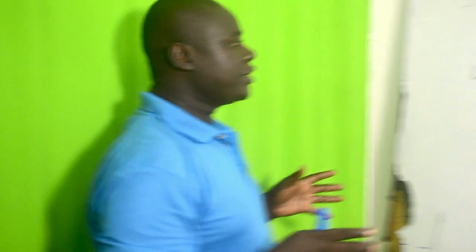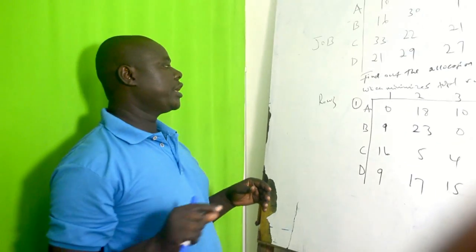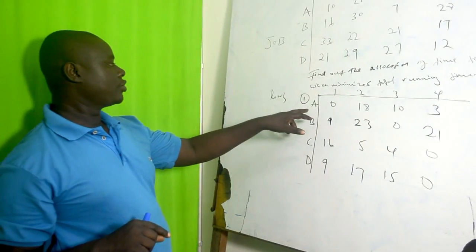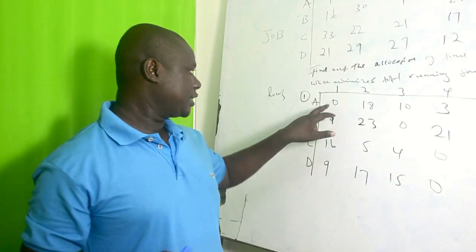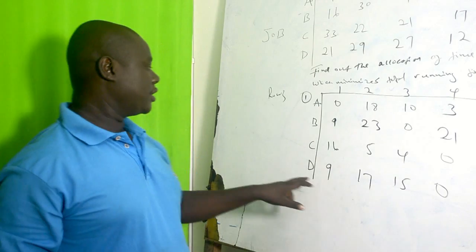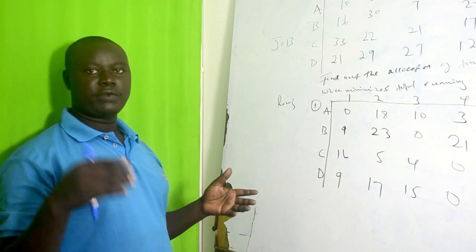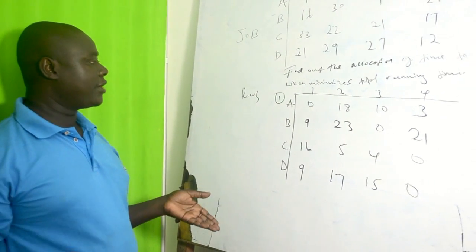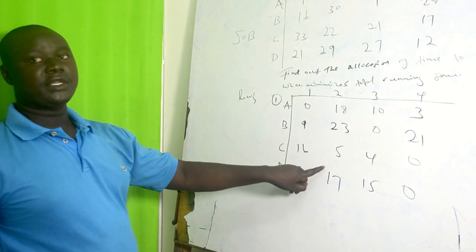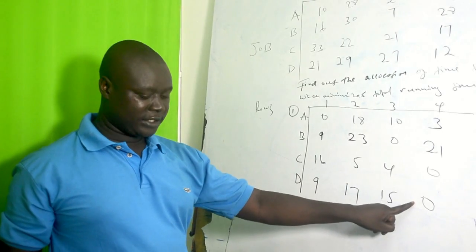After step 1, we check whether we have a zero in all rows and all columns. Row 1 has 0, row 2 has 0, row 3 has 0, row 4 has 0 — no problem there. Now we check the columns. Column 1 has 0 — correct. Column 2 does not have 0. Column 3 has 0. Column 4 does not have 0.